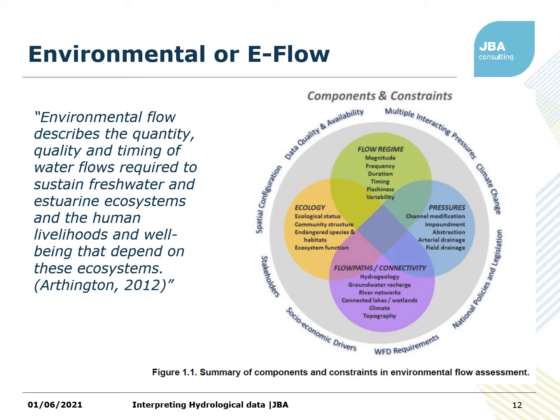Any one of these things can cause quite a lot of complication. The components identified by this research are the flow regime — size, timing and the things we looked at on that first slide — the different pressures, the ecology, and then flow paths and connectivity. This brings it back to the connections with groundwater. Although we're looking at surface water here, it's always important to remember how it's interacting with the groundwater.